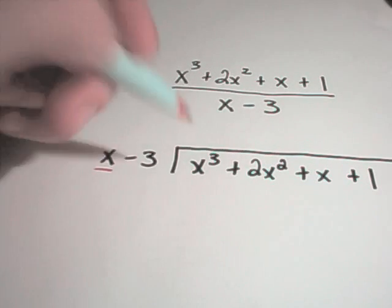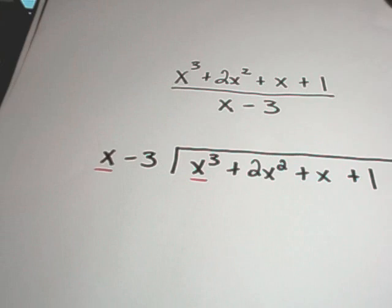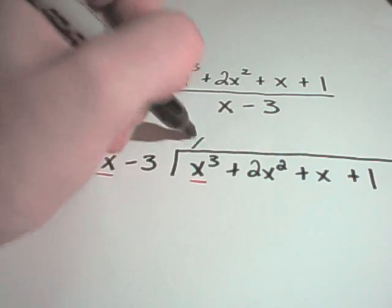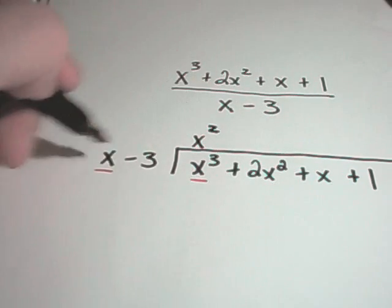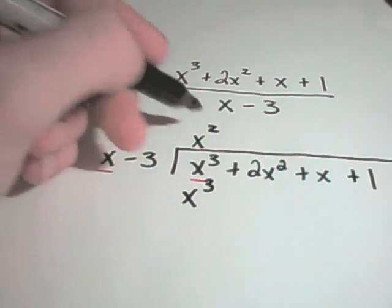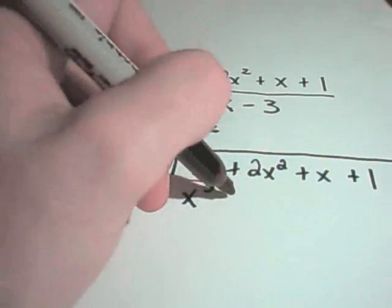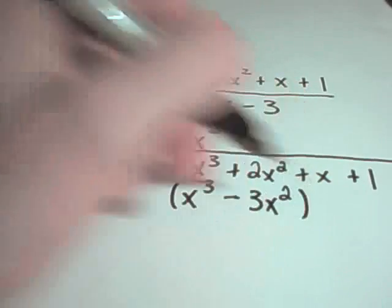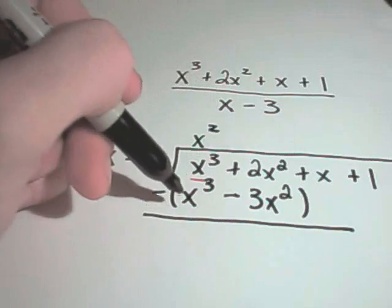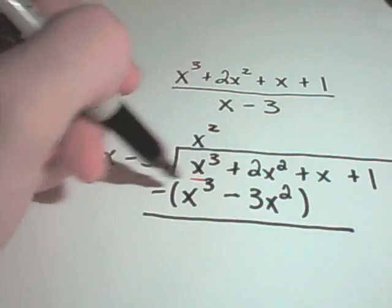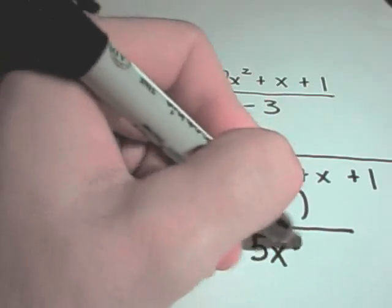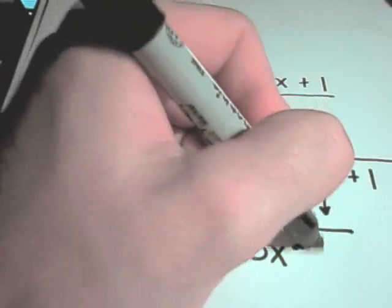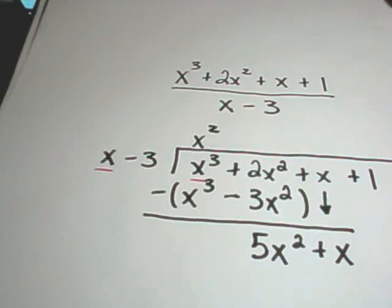So again I think x times what is x to the third? And that'll be x squared. So if I multiply x squared times x is x to the third, x squared times negative 3 is negative 3x squared. Put this in parentheses and subtract. So the x cubes will cancel out. I'll have 2x squared plus 3x squared, which is 5x squared. And I'll drop down my plus x term.